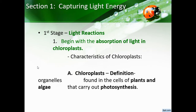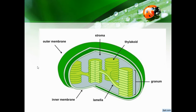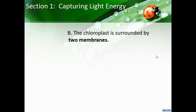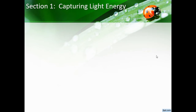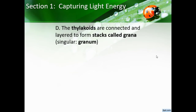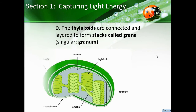Stage one is the light reactions, beginning with the absorption of light in the chloroplast. Chloroplasts are organelles found in cells of plants and algae that carry out photosynthesis. A chloroplast has an outer membrane and an inner membrane. The stroma is the jelly-like fluid inside. Thylakoids are individual disc structures; laminae is the connective tissue; and a granum is an entire stack of thylakoids — this is where light reactions take place.